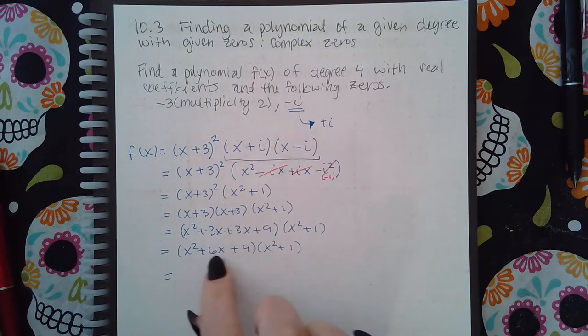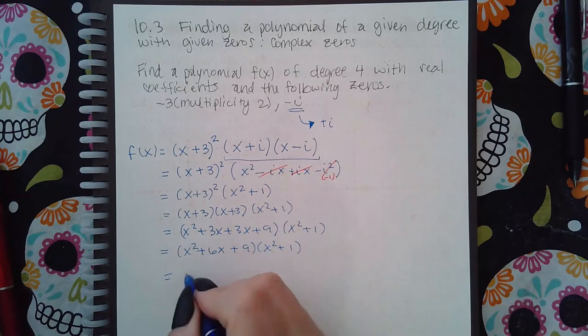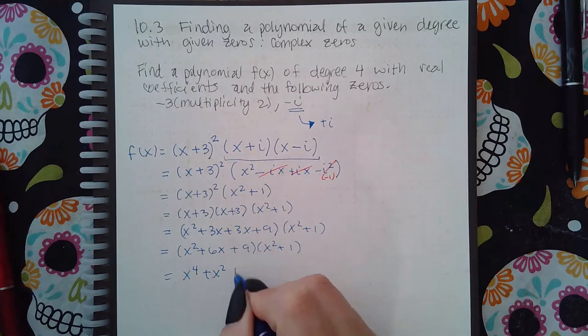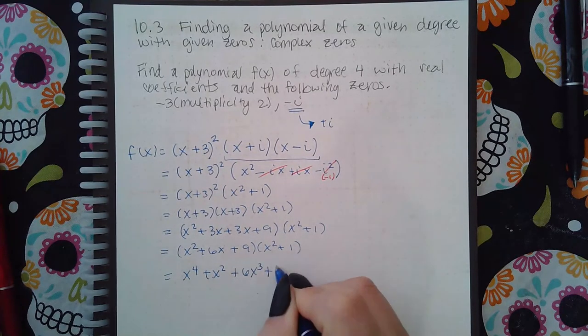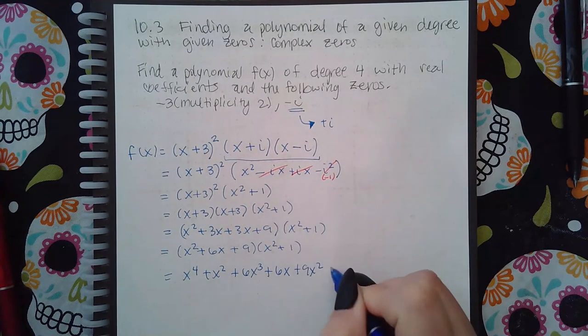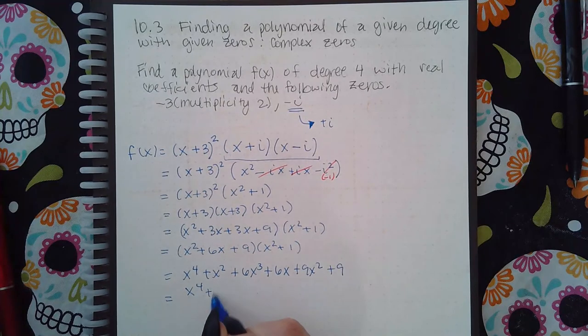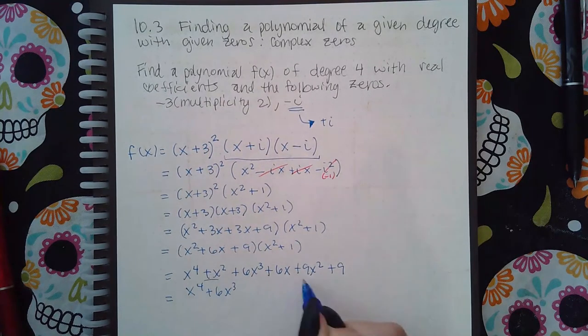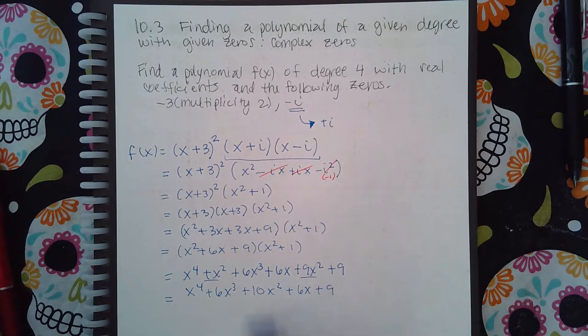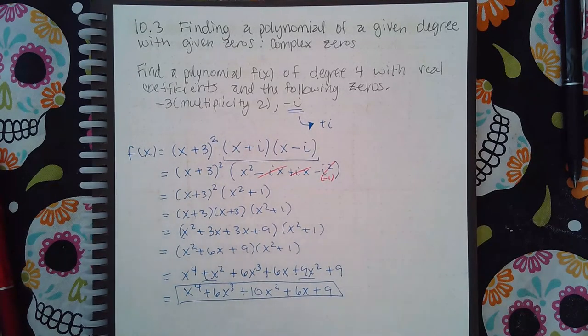Each one of these three terms is going to get multiplied by both of these two terms. So the first is x⁴ and then x² plus 6x³ plus 6x plus 9x² plus 9. If I combine my like terms I get x⁴+6x³+10x²+6x+9, and this is the polynomial with real coefficients that they're asking for.